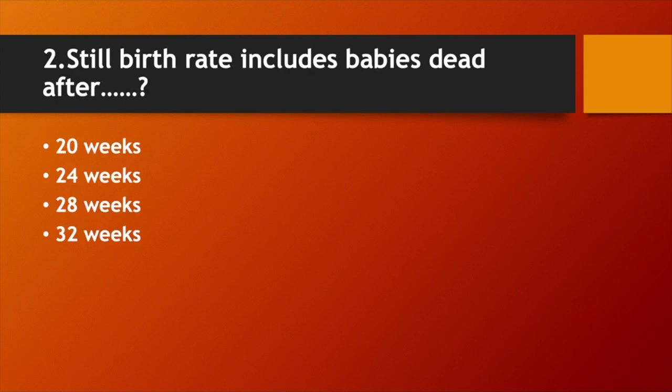Still birth rate includes baby's death after: Option A. 20 weeks. Option B. 24 weeks. Option C. 28 weeks. Option D. 32 weeks. Answer: Option C. 28 weeks.